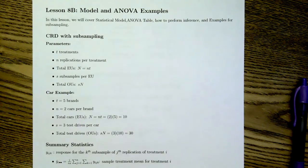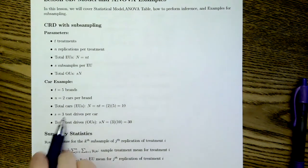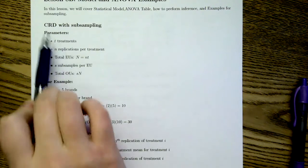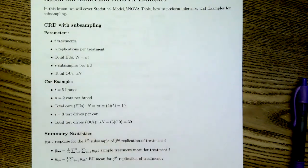In this lesson, we're going to continue our discussion of a subsampling design by looking at the statistical model, the ANOVA, and an example. Let's start with some parameterization notation and re-looking at our car example. We're going to be focused on the CRD with subsampling. You can add subsampling to RCBDs, GRCBDs, and so on, but we're just going to focus on a completely randomized design.